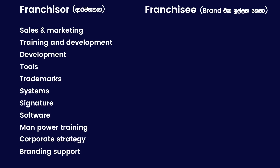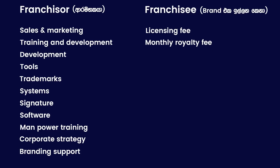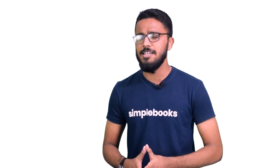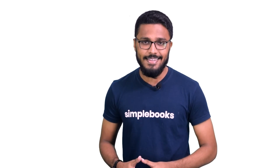In this case, the franchise involves a licensing fee, monthly royalty fee, and profit-taking percentage. The asset light is a load. Do you want to talk about the franchise model in detail? If you want to talk about this in the comments section, let us know about the franchise model.